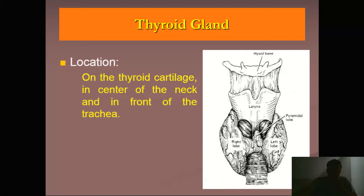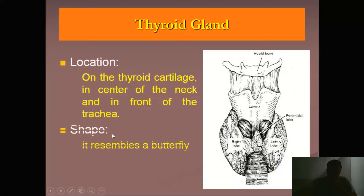Starting with the anatomy, as you can see in the slide, it is located at the junction of the larynx and trachea — just in front of the trachea. It looks like the shape of the letter H, or you can also see that the structure resembles the shape of a butterfly. So that is the location of the thyroid gland.